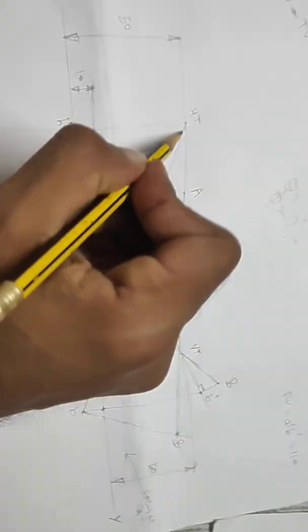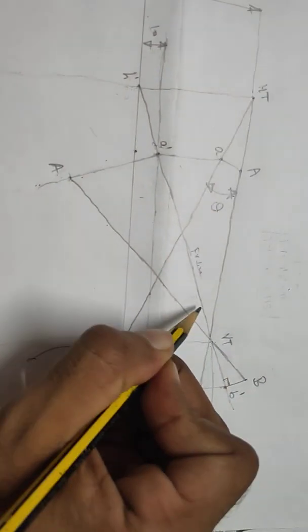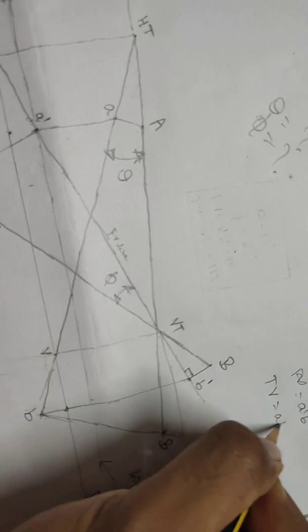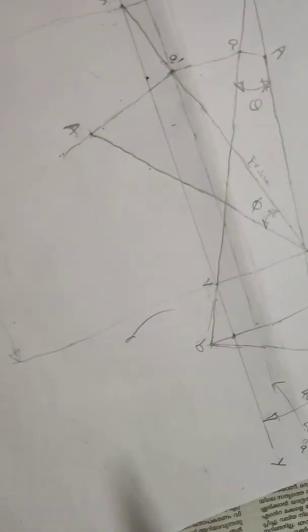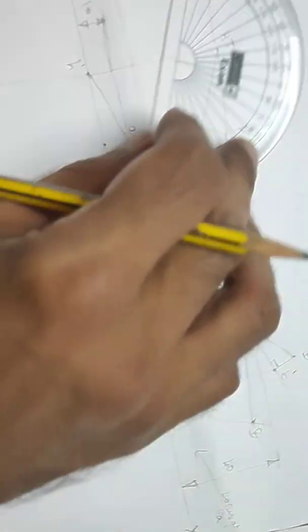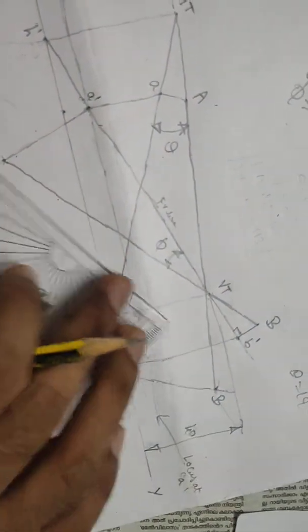HT will make an angle theta. We have AB in the top view — that is 113 mm. HT will make a protractor angle — we now have the true length inclination. The theta is approximately 19 degrees, read from the protractor at the bottom.